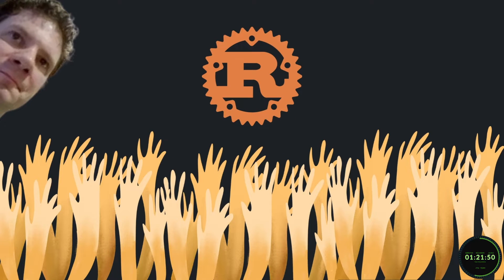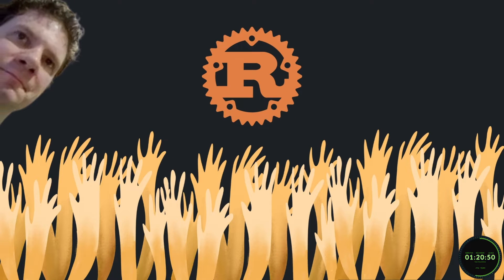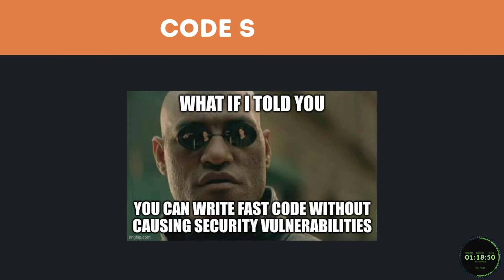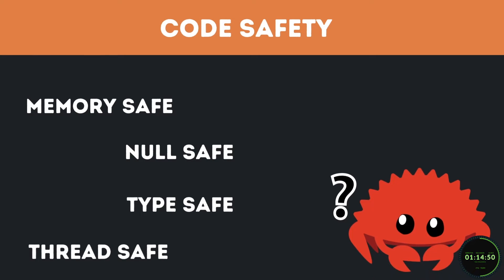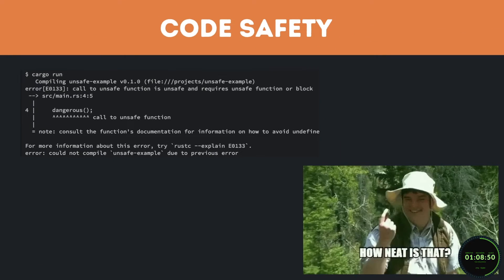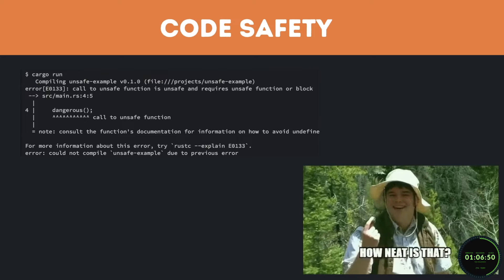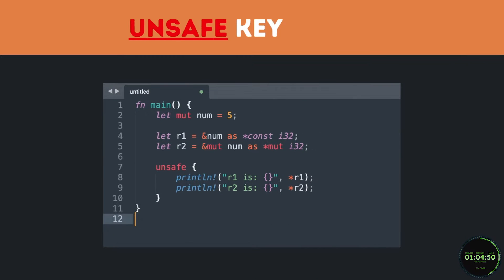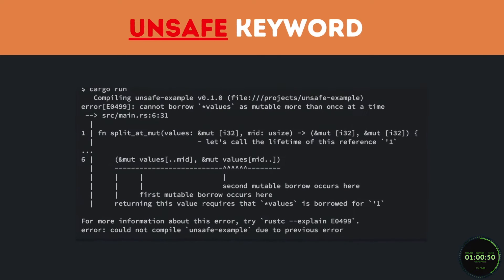One of the strongest reasons this language is so loved by the community is Rust's emphasis on code safety. Rust is memory safe, null safe, type safe, and thread safe by design. If the compiler detects unsafe code, it will refuse to compile it by default. You can use the unsafe keyword that Rust offers if you still want to execute the code regardless, and the great thing about this is that issues and errors can be traced down to specific code blocks, easing the entire process.